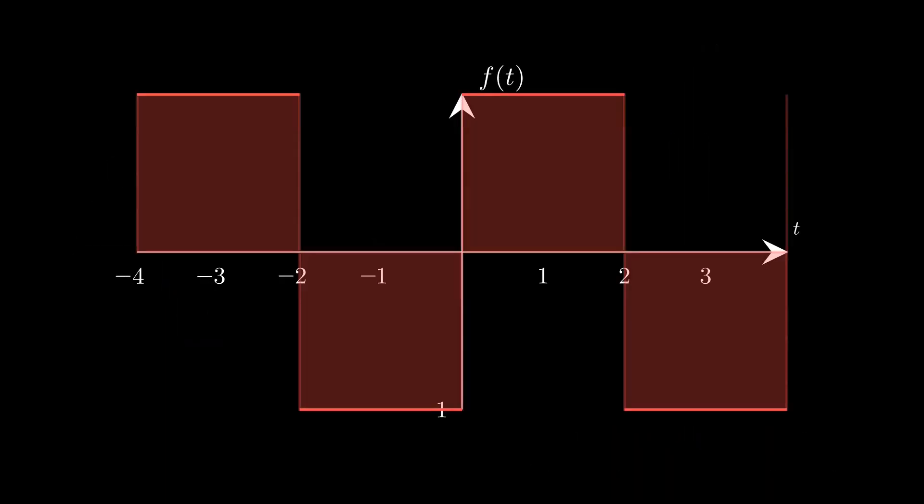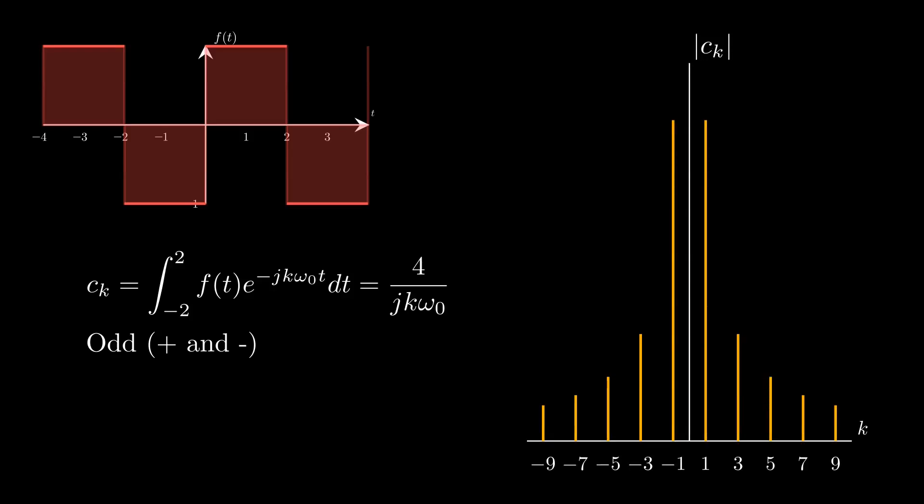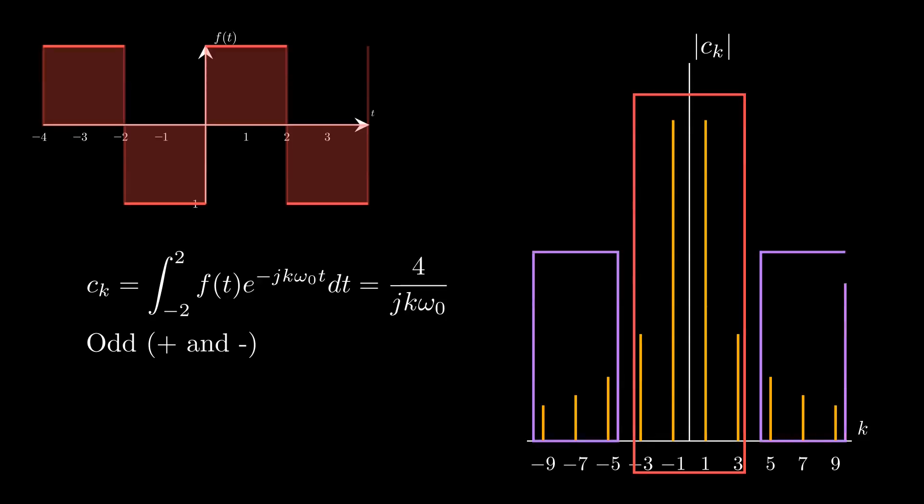I am going to use the square wave as an example to demonstrate how to obtain the frequency spectrum. First, compute the coefficients of the complex Fourier series. Then take the absolute value of each coefficient and arrange them according to the harmonic multiplicity k. Now we can see that the lower frequencies contribute more than the higher frequencies.